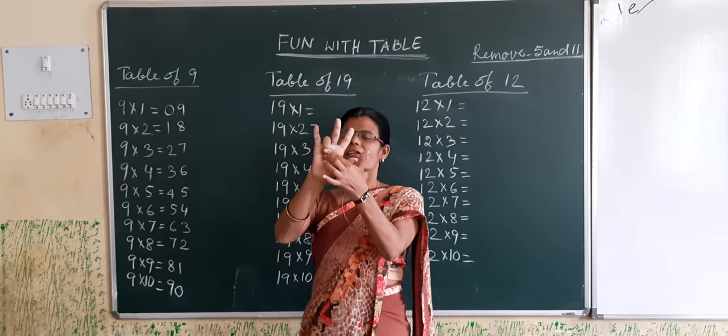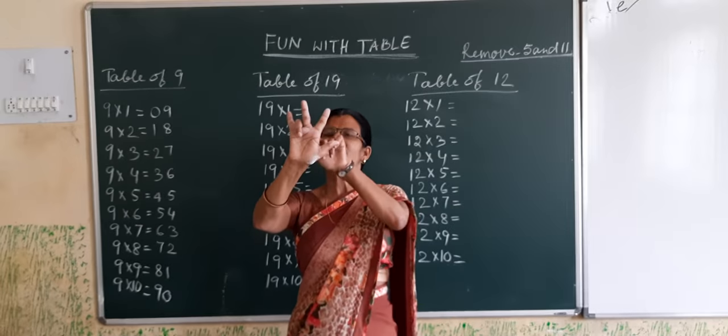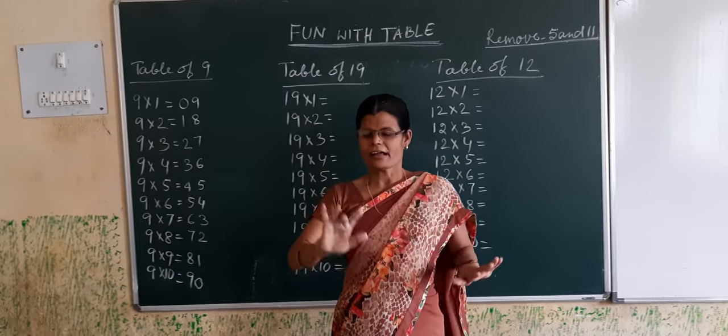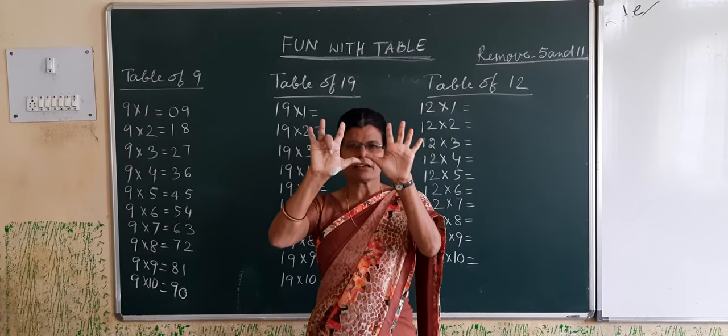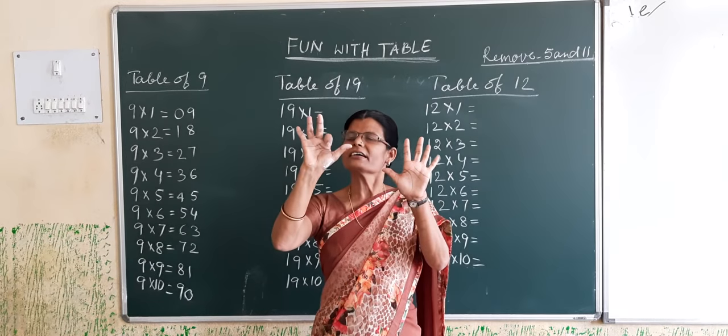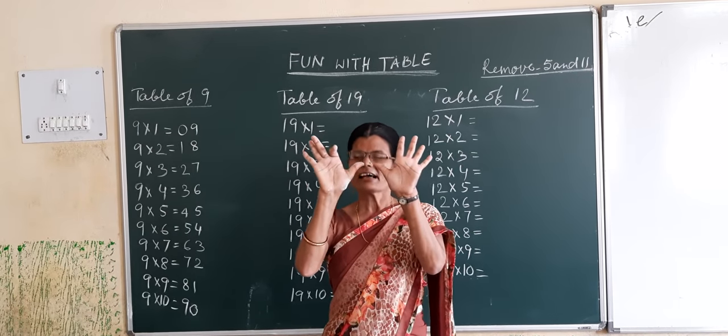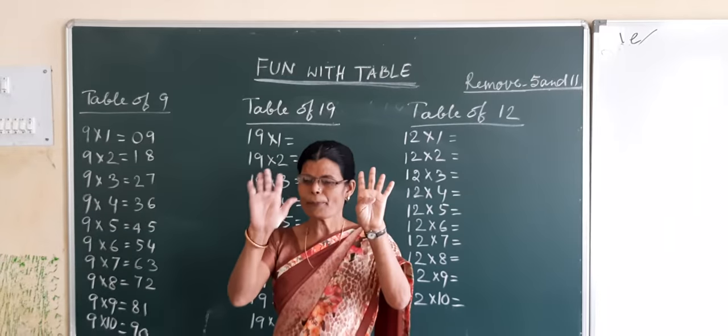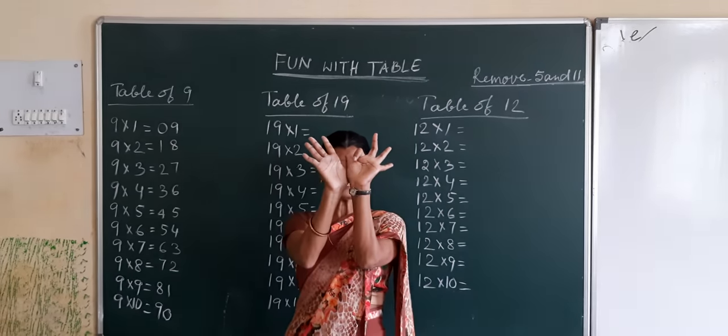9 twos are 1 ten and 8 ones. Count 1, 2, 3, 4, 5, 6, 7. 9 twos are 18. 9 threes are 27. 9 fours are 36. 9 fives are 45.